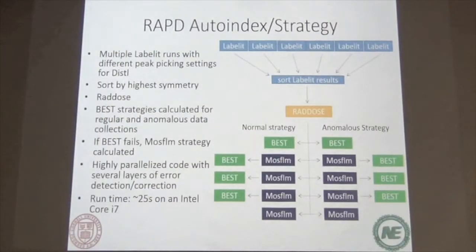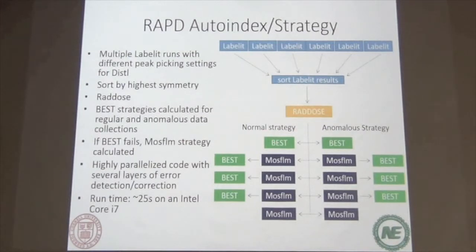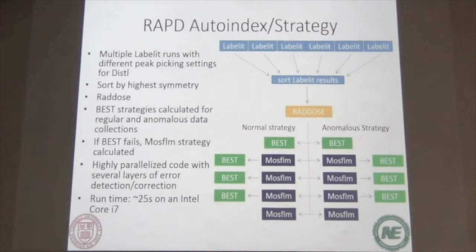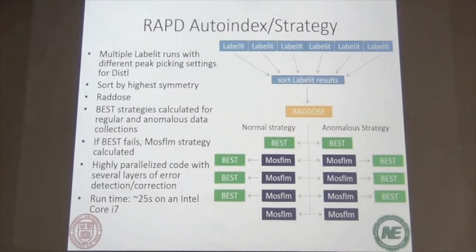So this is the pipeline and the way it works. I launch six different labelit runs with different spot-picking settings, and everything is parallelized — it runs on separate cores. Then I take all the results, score by the highest metric symmetry, run through RADDOSE, and then launch several different strategies, because sometimes the best fails with a p-factor error. So I pre-run the MOSFLM code and cut the resolution by one angstrom, two angstrom, three angstrom, and then launch BEST. This is all done with parallel processing, so it only takes about 20 seconds to run through the whole pipeline. Basically you're going to get a strategy as long as you can index the crystal.